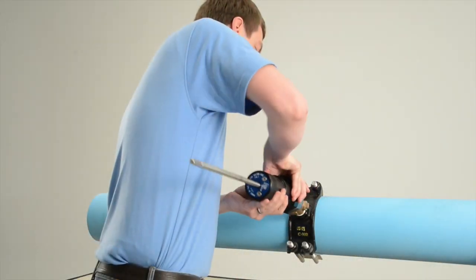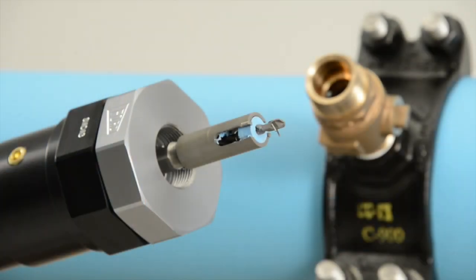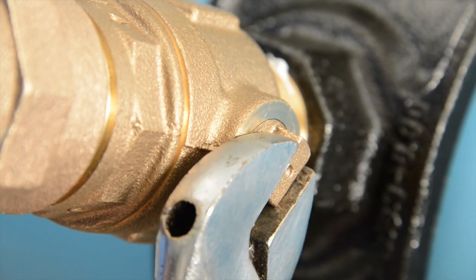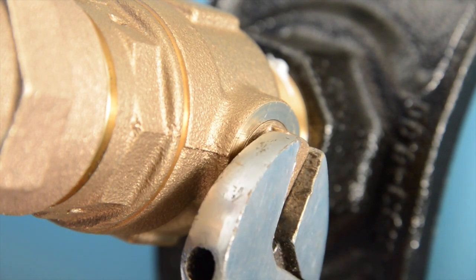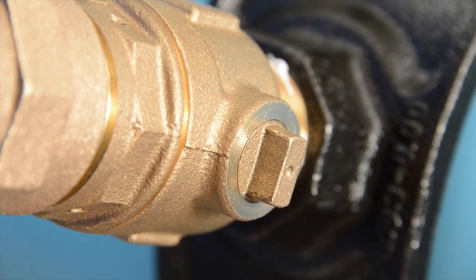Close the valve and remove the SimTap from the valve. Slowly open the valve to flush any chips or debris from the inlet of the valve. Close the valve and you are ready to attach the service line.